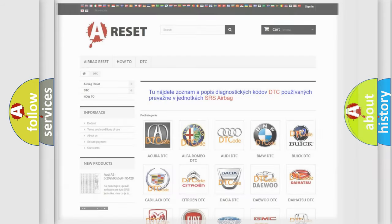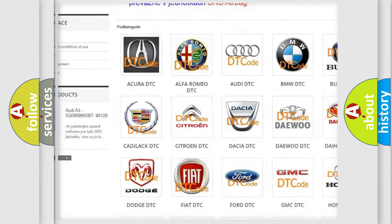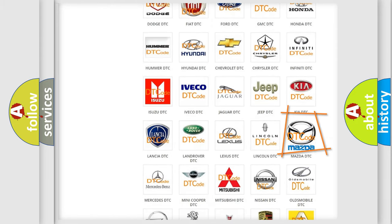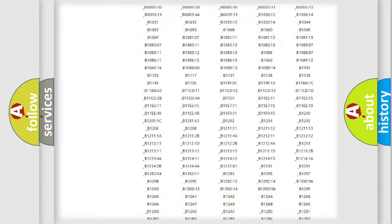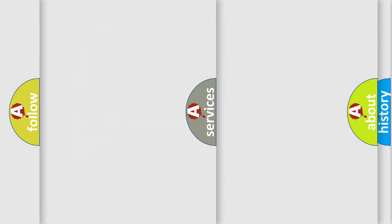Our website airbagreset.sk produces useful videos for you. You do not have to go through the OBD2 protocol anymore to know how to troubleshoot any car breakdown. You will find all the diagnostic codes that can be diagnosed in Mazda vehicles, and also many other useful things.